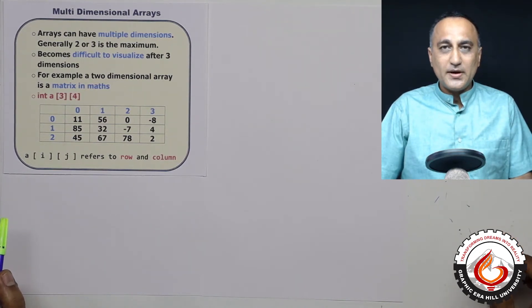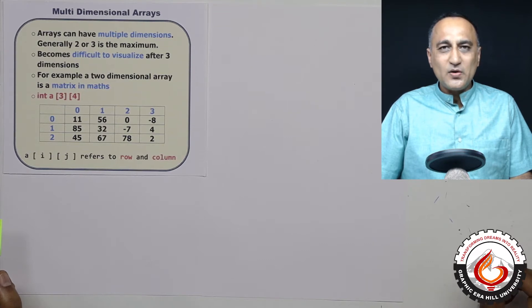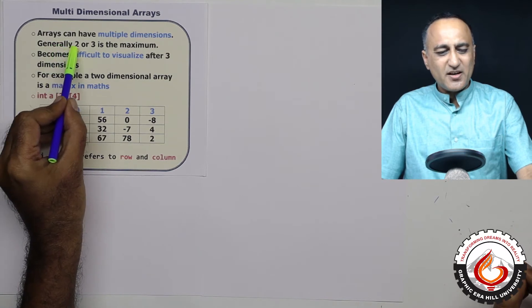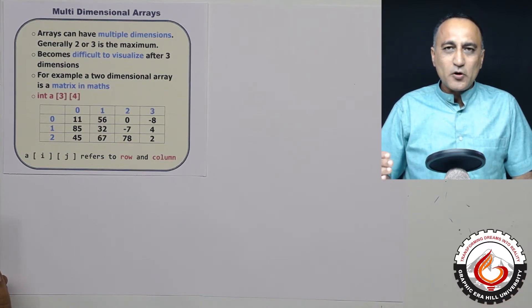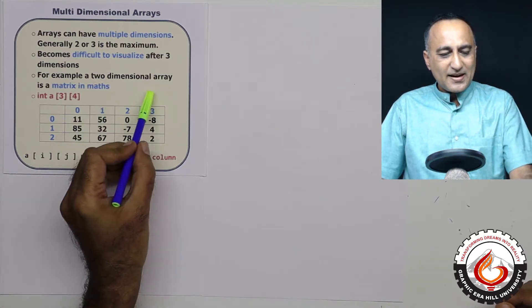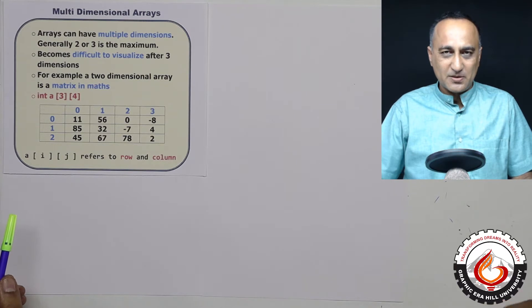Thus far, I have shown you arrays which have only a single dimension — that means only one row. It is very much possible, like a matrix in maths, for an array to have more than one dimension, meaning it can have rows and columns together. Arrays can have as many dimensions as you want, but generally two or three is the most you will end up working with. Beyond three dimensions, it becomes extremely difficult to visualize how it is stored. A two-dimensional array is similar to a matrix in maths where you have matrix addition, multiplication, subtraction, and so on.